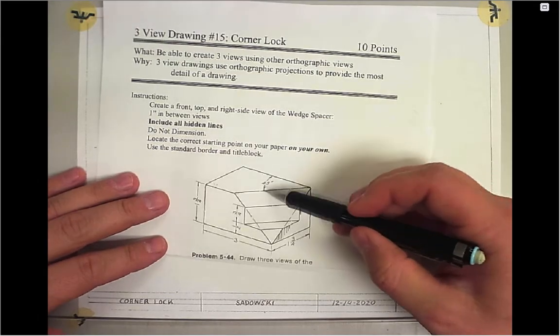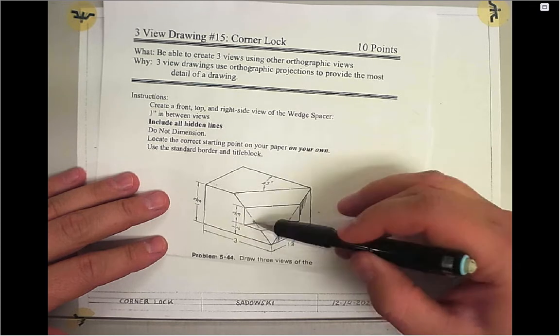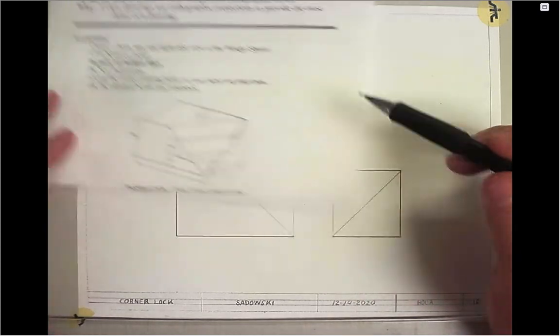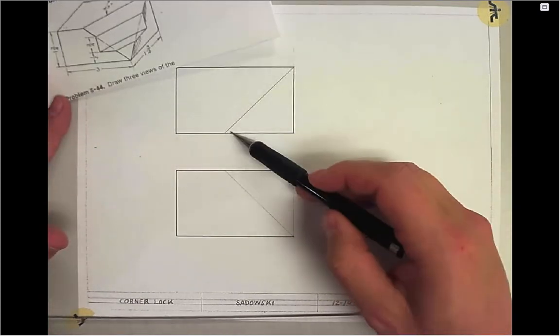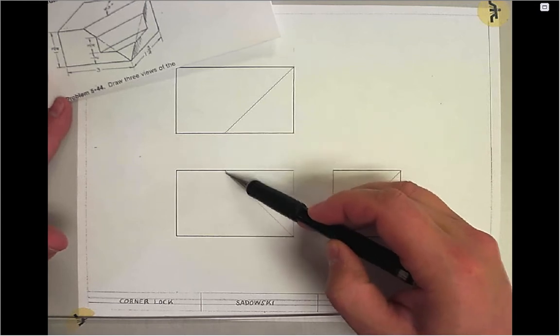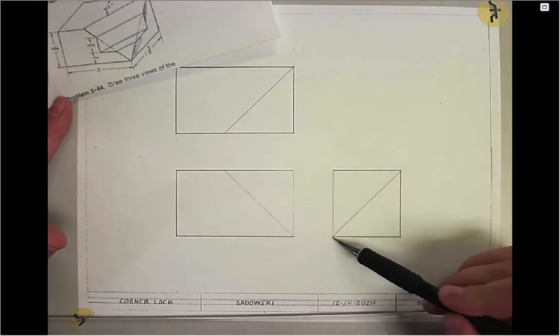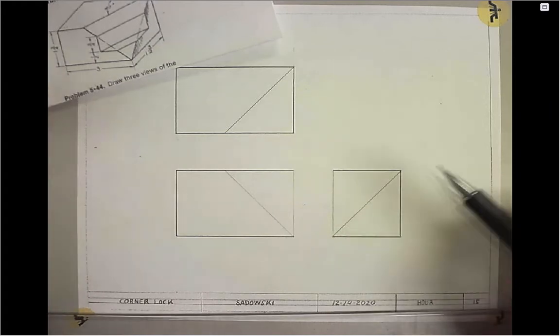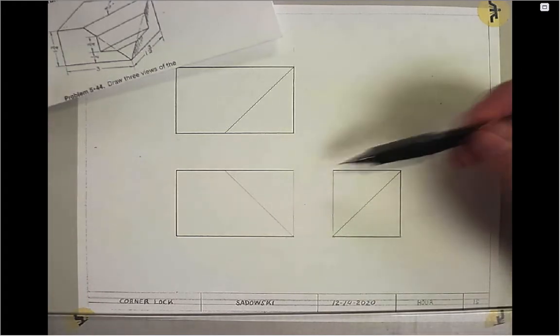I basically took those rectangles and added in the 45-degree angles. These are actually all 45-degree angles that are on here. Then I just transferred this one down, this one's on a 45 degree, and then this one goes corner to corner which ends up being a 45 degree because it's 1-3/4 by 3 by 1-3/4.